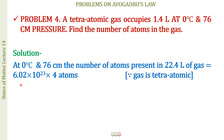Multiply Avogadro's number by 4 to get the number of atoms. So the number of atoms occupying 22.4 liters of this tetraatomic gas is 6.02 × 10²³ × 4.